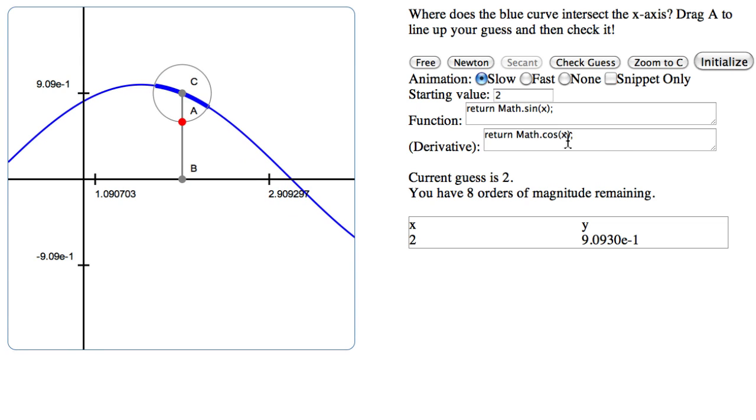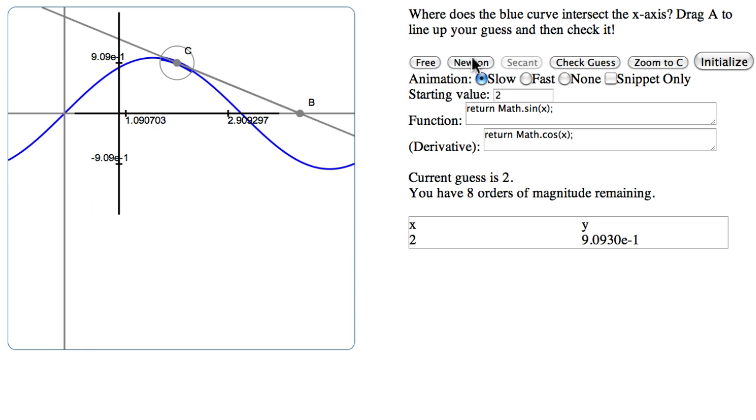This time we will try this Newton method. So that means you see how there's this line here, fits the function very well. This is the tangent line of calculus.